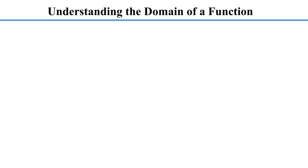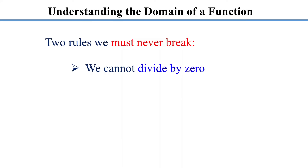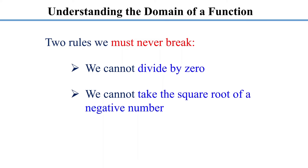When working with real numbers, there are two rules we must never break. Firstly, we cannot divide by zero. Division by zero is undefined — remember this rule when finding the domain of a function with a variable in the denominator. Secondly, we cannot take the square root of a negative number. The square root of a negative number is undefined in the real number system. Remember this rule when finding the domain of a function with a variable under a square root.